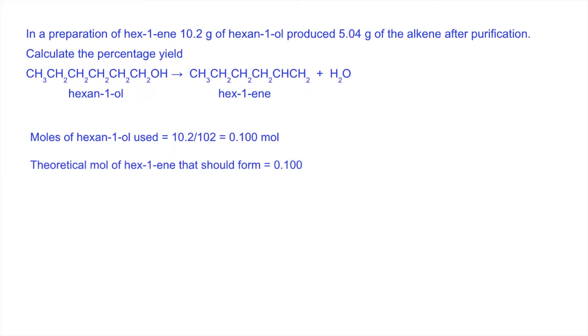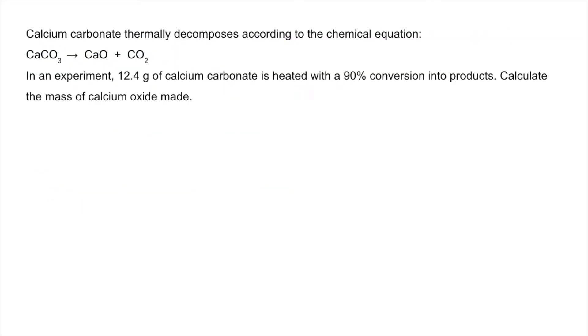That's your theoretical or maximum moles. Now work out actual moles of hexan-1-ene formed: 5.04 grams formed, mass over Mr again, 0.06 moles. Bring the formula into play: percentage yield is actual over theoretical times 100, so it's a 60% yield.